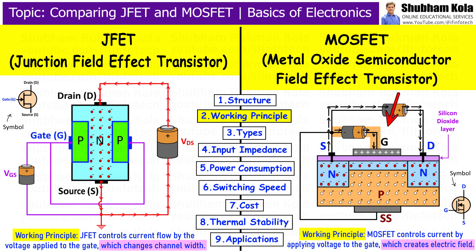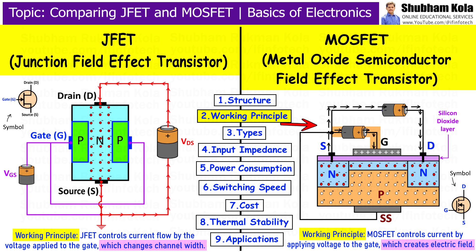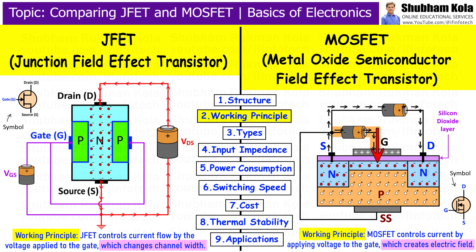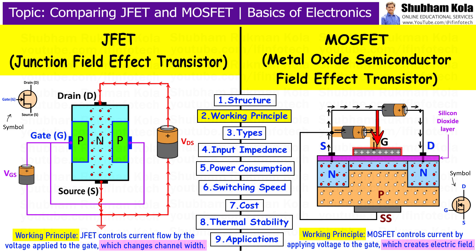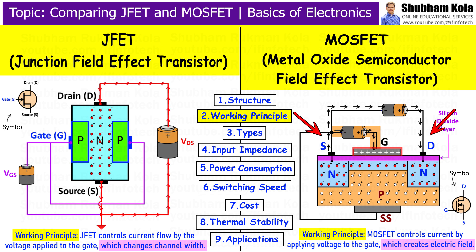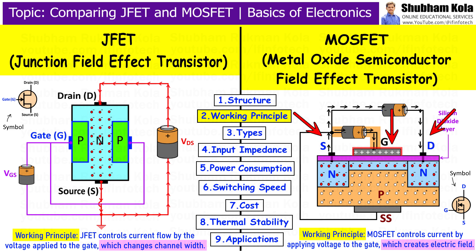In MOSFET, the gate voltage also controls the current, but no current flows into the gate. The gate is insulated, so it only affects the current between the source and drain by changing the electric field.